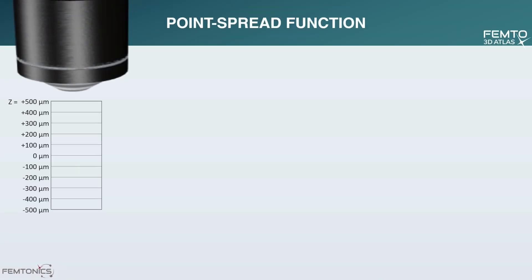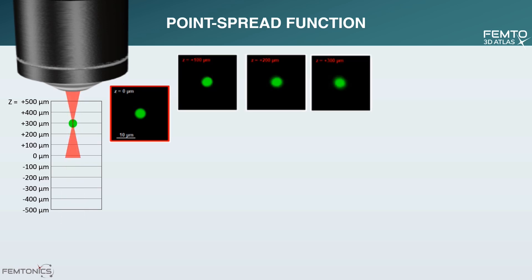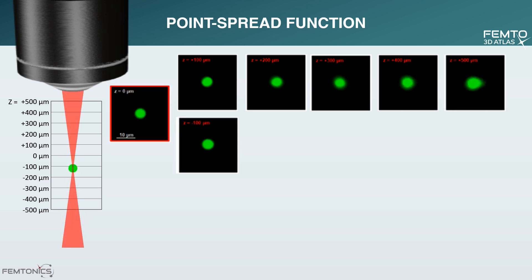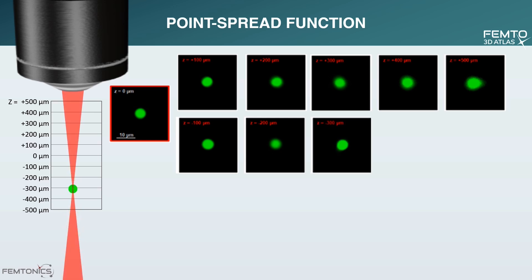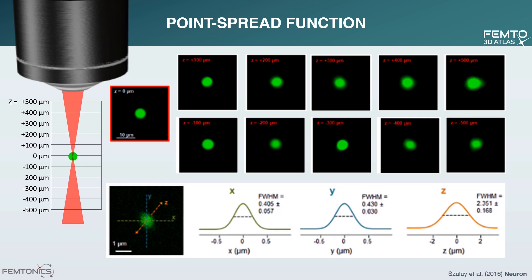With the acousto-optical technology, the focus of the laser can move independently of the focal plane of the objective. Therefore, the focus in depth can be changed without moving the objective. This in itself has a lot of advantages, for example in electrophysiology, and enables fast and accurate movement in Z. Thanks to the well-set optical parameters, the change in the point spread function and the size of the focal point is under control and close to the theoretical optimum, as published in our 2016 Neuron paper. The Gaussian graphs represent the dimensions in microns of the point spread function.